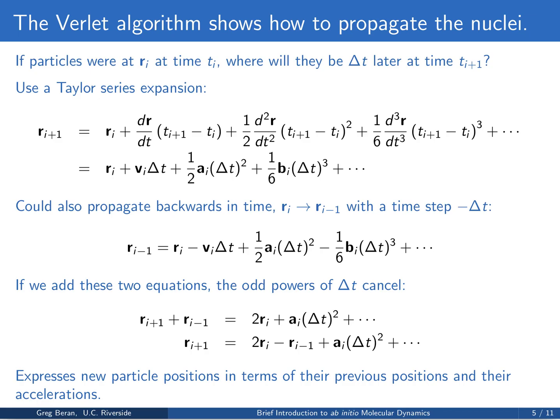This looks like the new coordinate positions equal the old positions plus the velocity times delta T, plus one-half the acceleration times delta T squared, plus one-sixth the hyper-acceleration times delta T cubed, and so on. We could also consider propagating backwards in time from R_i to R_{i-1} with a time step of negative delta T. This gives the same expression except the terms with odd powers of delta T come in with a negative sign, giving R_{i-1} equal to R_i minus the velocity times delta T, plus one-half the acceleration times delta T squared, minus one-sixth the hyper-acceleration times delta T cubed, etc.